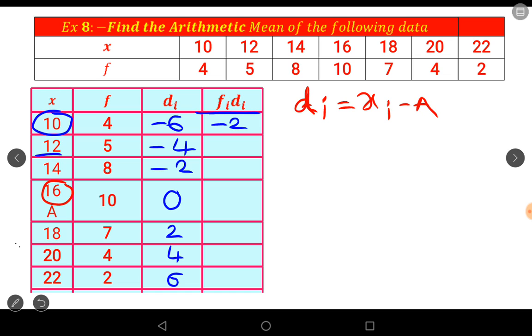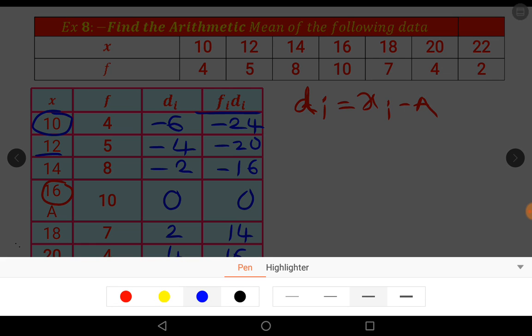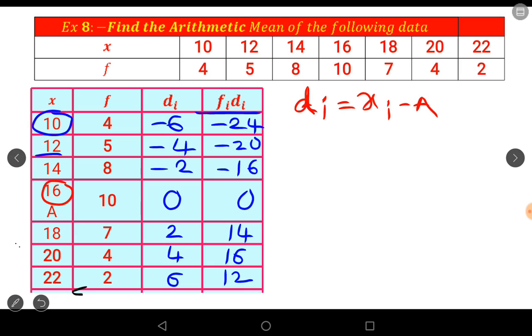Before we had f_i into x_i, here f_i into d_i. 4 into minus 6 is minus 24, 5 into minus 4 is minus 20, 8 into minus 2 is minus 16, 10 into 0 is 0, 7 into 2 is 14, 4 into 4 is 16, 2 into 6 is 12. Next, find the sum. Here first one is sigma f_i, second one is sigma f_i into d_i.